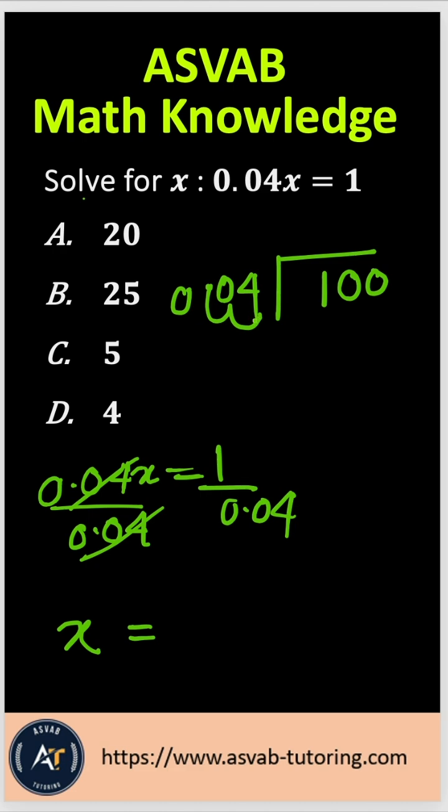Now, how many times does 4 go into 100? You know, 25. That gives you 100. So with that, the correct answer is option B.